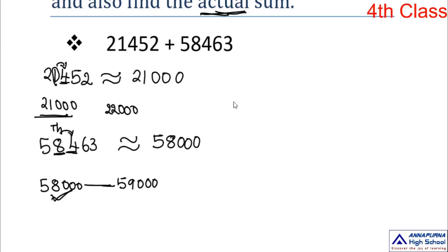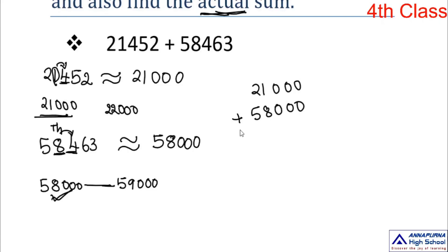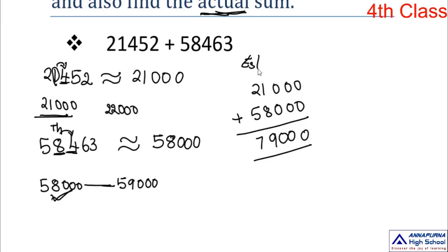Now estimate the sum: 21,000 plus 58,000. Without doing the actual sum, you can estimate: 1 plus 8 equals 9, 2 plus 5 equals 7, so the estimated sum is 79,000. The zeros simply carry through. By practice you will get estimations quickly.